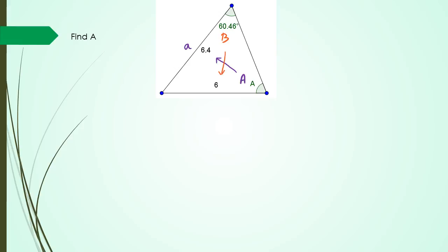The side opposite is little b. So what I'm going to write is sine A over a equals sine B over b. Now sine A, that's what I'm trying to figure out, so I'm going to leave it as it is. Little a is equal to 6.4. My other angle that I'm working with is 60.46.